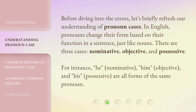Before diving into the errors, let's briefly refresh our understanding of pronoun cases. In English, pronouns change their form based on their function in a sentence, just like nouns. There are three cases: nominative, objective, and possessive. For instance, he (nominative), him (objective), and his (possessive) are all forms of the same pronoun.